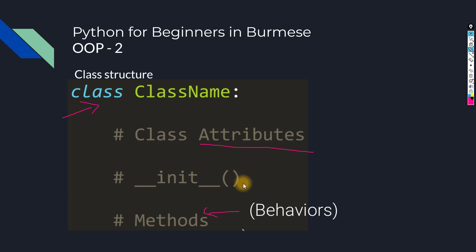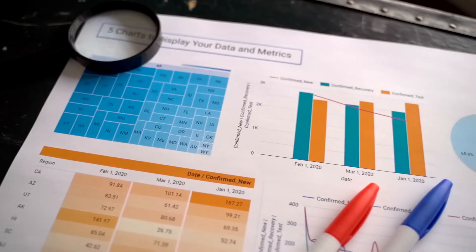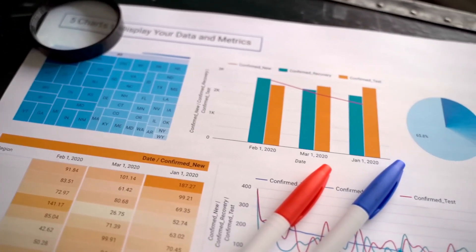The methods represent behavior. For example, in a car class: drive, stop, and slow down are methods. Methods are functions that define the behavior of an object. This is the object-oriented concept.